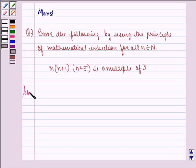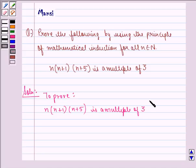Let us start with the solution to this question. We have to prove here that n(n+1)(n+5) is a multiple of 3. Let this be P(n).